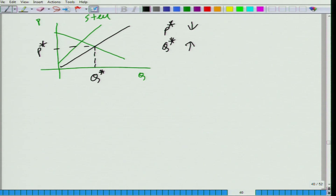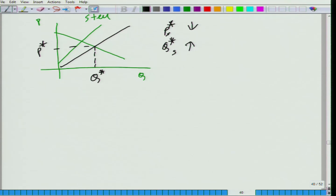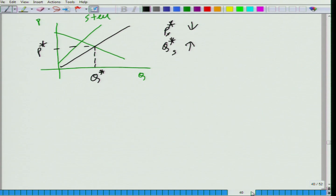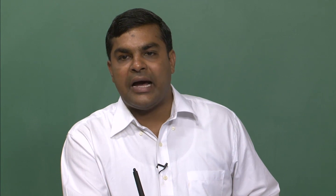So here, the equilibrium price of steel is coming down and the equilibrium quantity of steel is going up. Now what if we consider these two parts together? If the price of electricity has climbed up and aluminum production is intensive in electricity, and steel is a substitute of aluminum in both production and consumption — what would be the impact of an increase in electricity price on the steel market? Supply curve would shift outwards, and we would get a new equilibrium point.